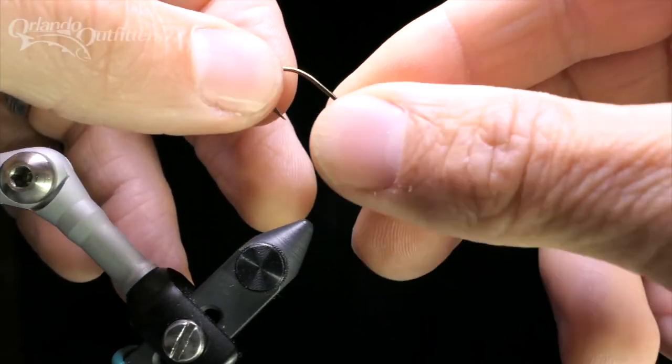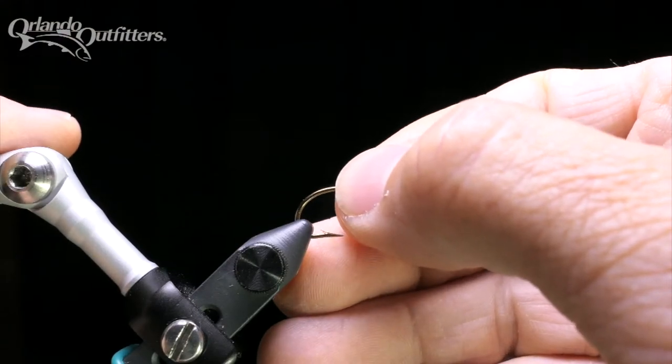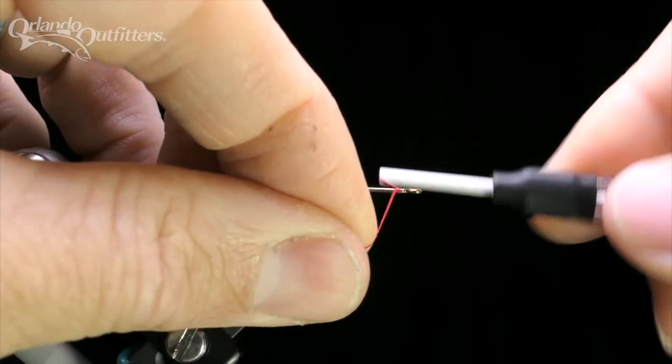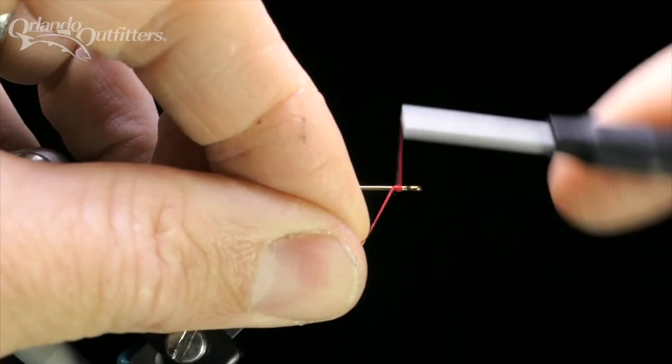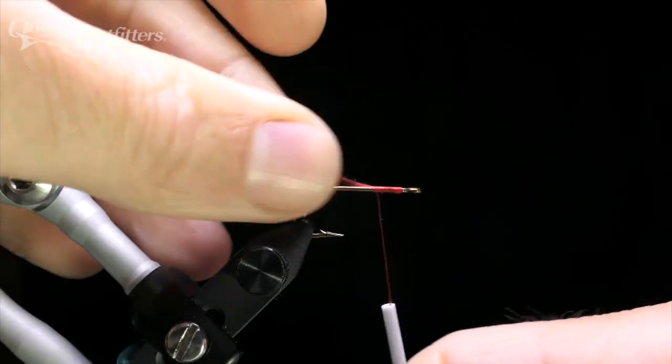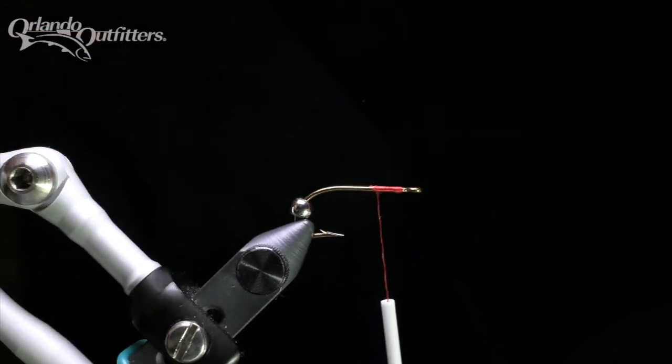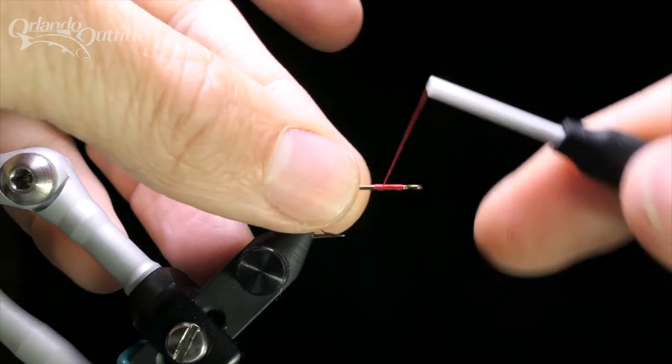The first step is to thread a bead onto the hook, then place the hook in your vise. Start the red thread close to the eye, making sure the thread is in front of the bead. Cover the hook shank about halfway back to the hook point. Trim your thread, then advance the thread to around a bead diameter behind the eye of the hook.